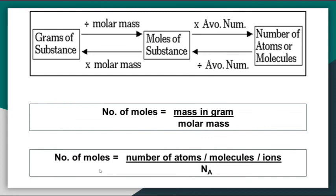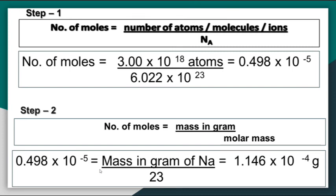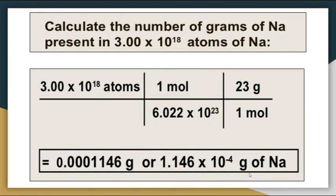Using the formula: number of moles = mass in gram ÷ molar mass; and moles × Avogadro's constant gives number of atoms. Step 1: Number of moles = 3 × 10¹⁸ atoms ÷ 6.022 × 10²³. We obtain 0.498 × 10⁻⁵ moles. Step 2: Multiply by molar mass of sodium (23). We obtain 1.146 × 10⁻⁴ gram of sodium.